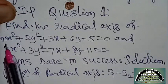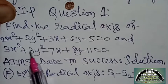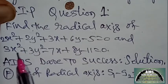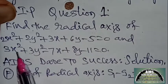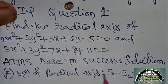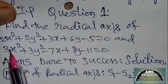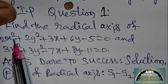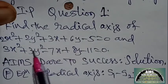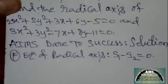According to the question, x² and y² coefficient is 2 in the first circle, and 3 in the second circle. But you can equate them. To subtract two circles, x² and y² coefficients should be equated. So multiply first circle by 3 and second circle by 2.